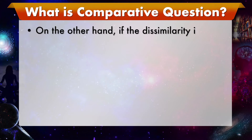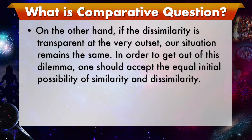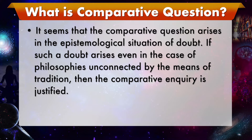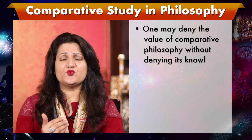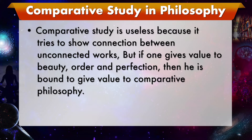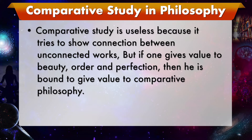On the other hand, if dissimilarity is transparent at the very outset, our situation remains the same. In order to get out of this dilemma, one should accept the equal initial possibility of similarity and dissimilarity. It seems that the comparative question arises in the epistemological situation of doubt. If such a doubt arises even in the case of philosophies unconnected by means of tradition, then the comparative inquiry is justified. One may deny the value of comparative philosophy without denying its knowledge goal. Comparative study is useless, they say, because it tries to show connections between unconnected works.